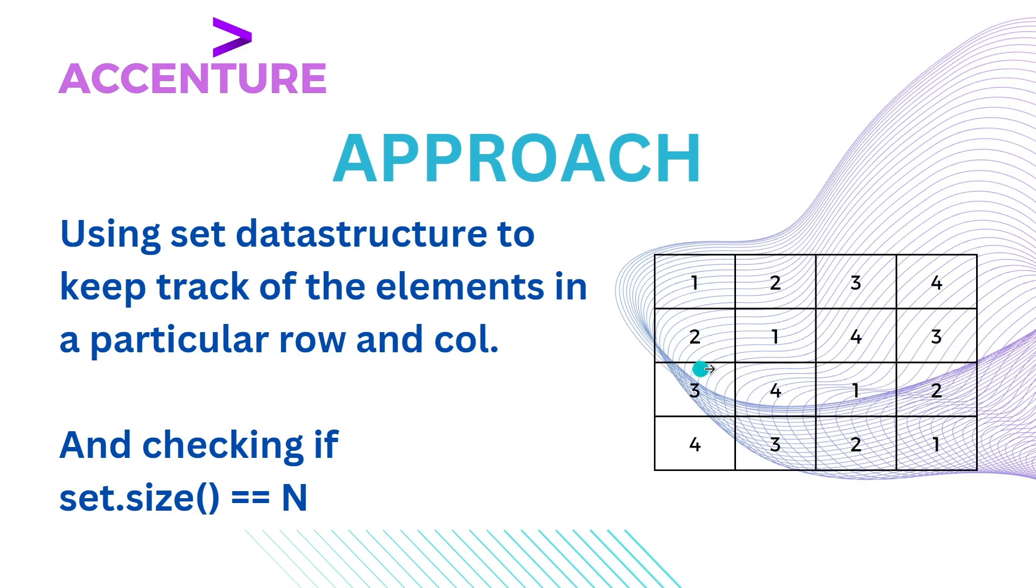So moving on, we will store the elements of a row in one set and elements of a column in another set. At the end of each row and each column we will check if the size of sets is equal to n, that is in our case is it equal to 4. If so, then we will move on to the next row and column.